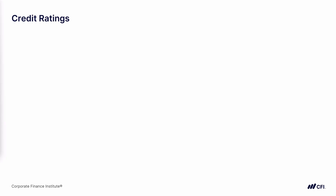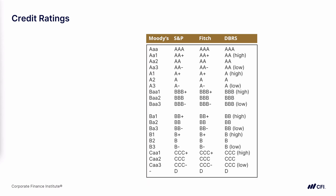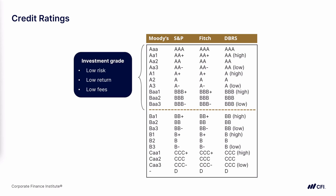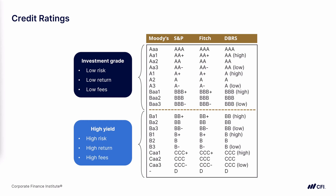Credit ratings are issued by agencies such as Moody's, S&P, Fitch, and DBRS. Each rates different types of corporate debt using their own system. We can simplify by dividing ratings into two categories: investment-grade debt at the top — low risk, low return, and low fees — and non-investment-grade or high-yield debt at the bottom — higher risk, higher return, and higher fees.